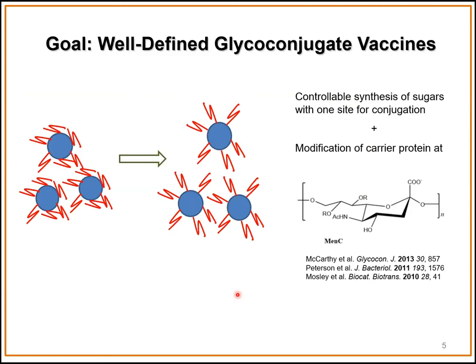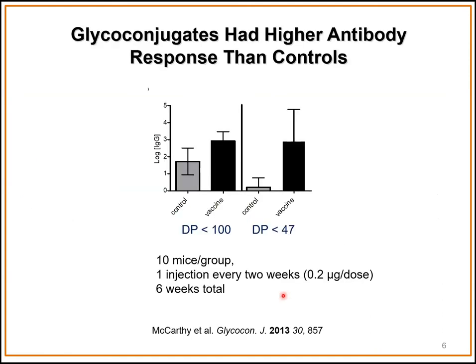Much of the work I did previous to my independent career was focused on using capsule polymerases, specifically from serogroup C, in chemo-enzymatic synthesis of sugars to create a controllable synthesis with one site for conjugation. We used lacticides with a preponderance squarate as our acceptor, and used the serogroup C capsule polymerase as well as CSD2 in chemo-enzymatic processes to make sugars with azide groups. We used click chemistry to attach to a carrier protein, producing serogroup C glyco-conjugates with higher antibody responses than controls.